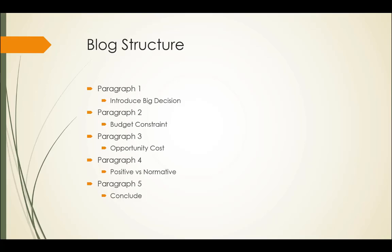Second paragraph, you're going to jump into the budget constraint. Paragraph three, opportunity cost. Paragraph four, positive versus normative. And paragraph five, conclude. We're going to talk about each of these separately now.